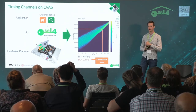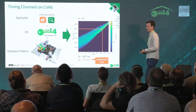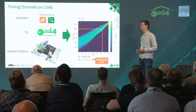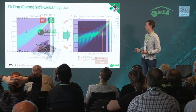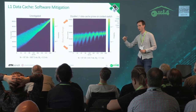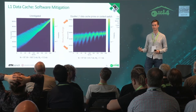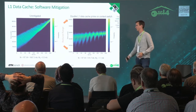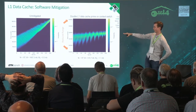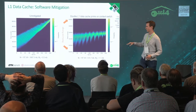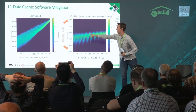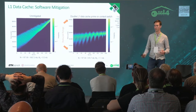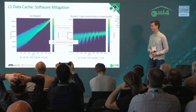Now let's look at mitigation strategies. First, we tried to prevent timing channels using existing architectural means by having seL4 prime the data cache twice on each context switch — essentially the kernel overrides everything previously stored. However, this is not fully effective. The range of values on the Y-axis is significantly reduced, but horizontal patterns remain due to microarchitectural components the operating system has no control over. The conclusion was that we need hardware support.